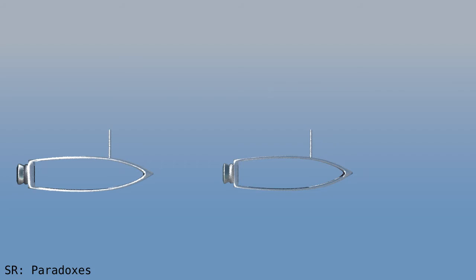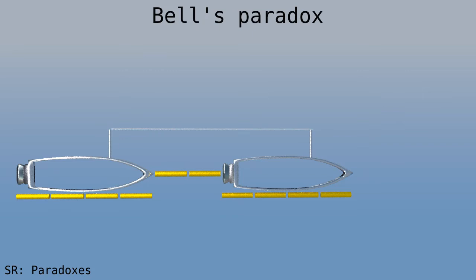Let's look at Bell's paradox. We have two identical spaceships at rest. Each is four units long, and the distance between them is two units. They are connected by a thin thread that could easily break if you pull on it too hard. Now here's the question. If both spaceships accelerate identically, will the thread contract and break? Well, yes, it will.